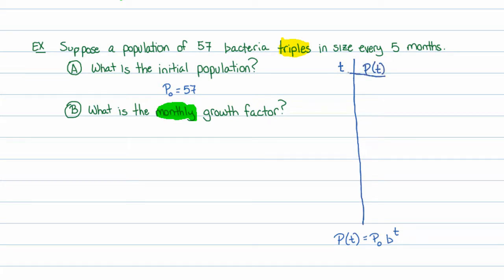At time zero, the initial population is 57. And five months later, since the population triples every five months, it's going to be 57 times 3, or three to the first power. Another way to write this is 3 to the first power. And then at ten months, the population will be 57 times 3 squared, because five months after the five-month mark, we multiply by another 3.